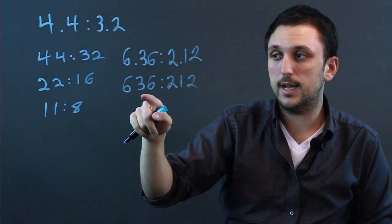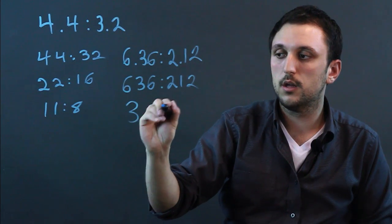And this, these are both actually divisible by 212. So it would be 3 to 1.